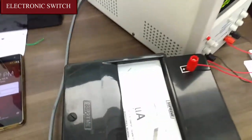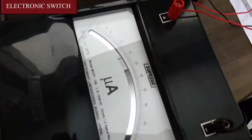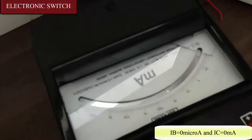And we can see both the ammeters are giving a reading of 0. IB is also 0 and IC is also 0.